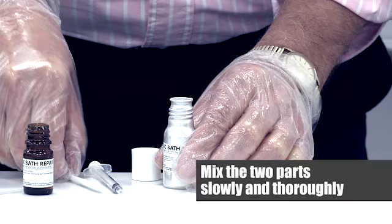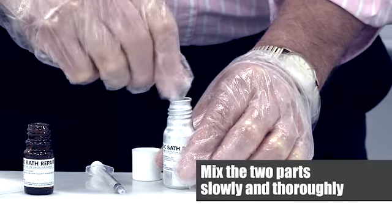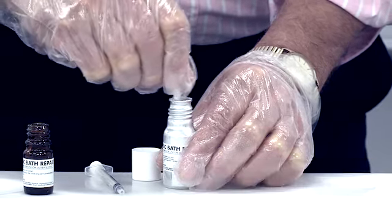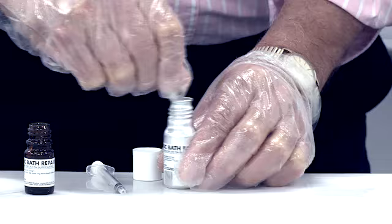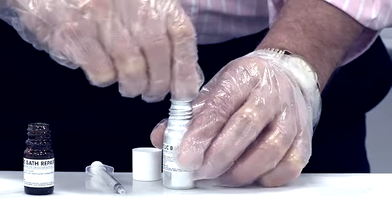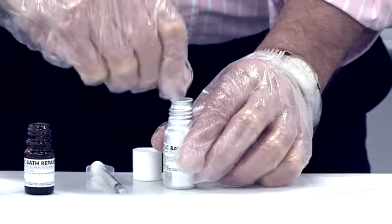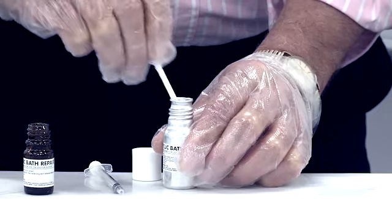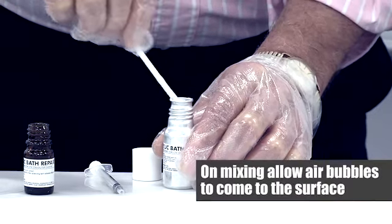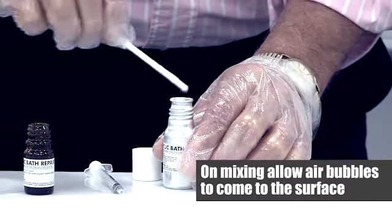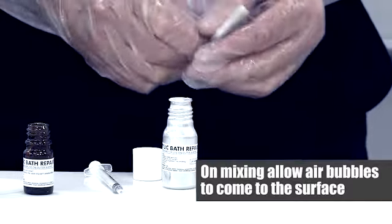Mix the two parts in the aluminum container slowly and thoroughly using the stirring rod provided. During the mixing process, some air bubbles may appear. If this happens, replace the cap on the aluminum container to allow any air bubbles to come to the surface. Allow approximately five minutes.